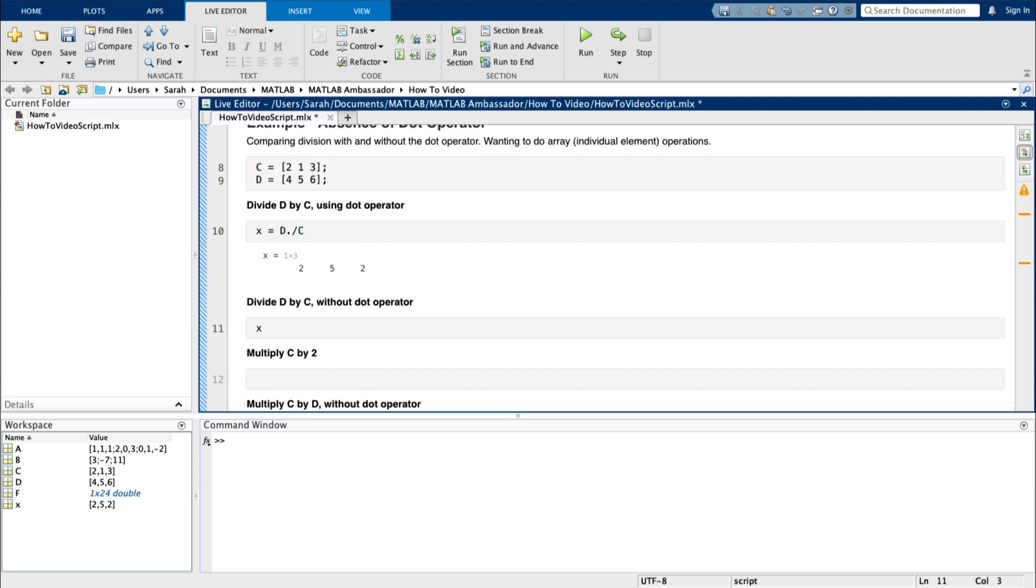If I did not use the dot operator, I would still be performing a valid mathematical operation, but not the one that I wanted. I would instead be solving the matrix equation xc equals d.